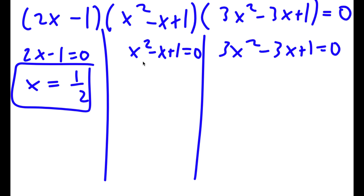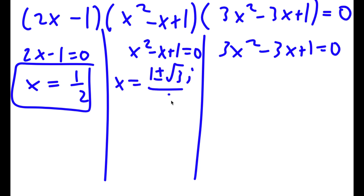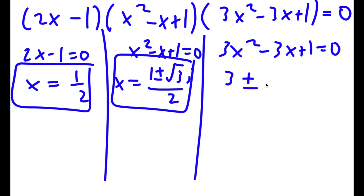For x squared minus x plus 1 equals 0, we get x equals (1 plus or minus the square root of negative 3) over 2, which gives complex solutions (1 ± i√3)/2. For 3x squared minus 3x plus 1 equals 0, we get x equals (3 ± i√3) over 6.